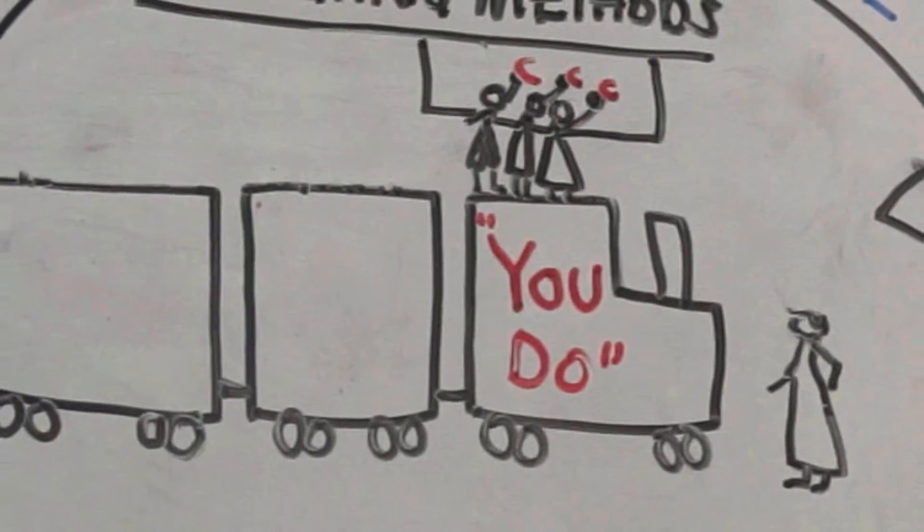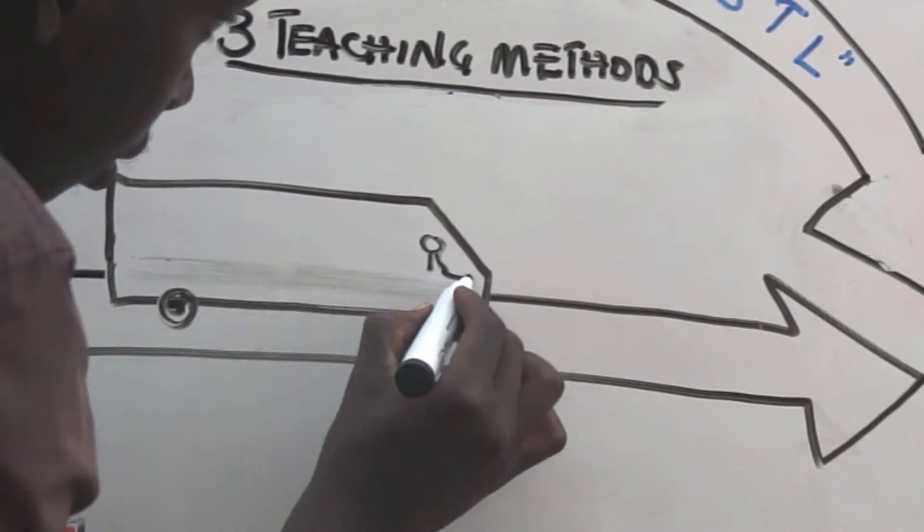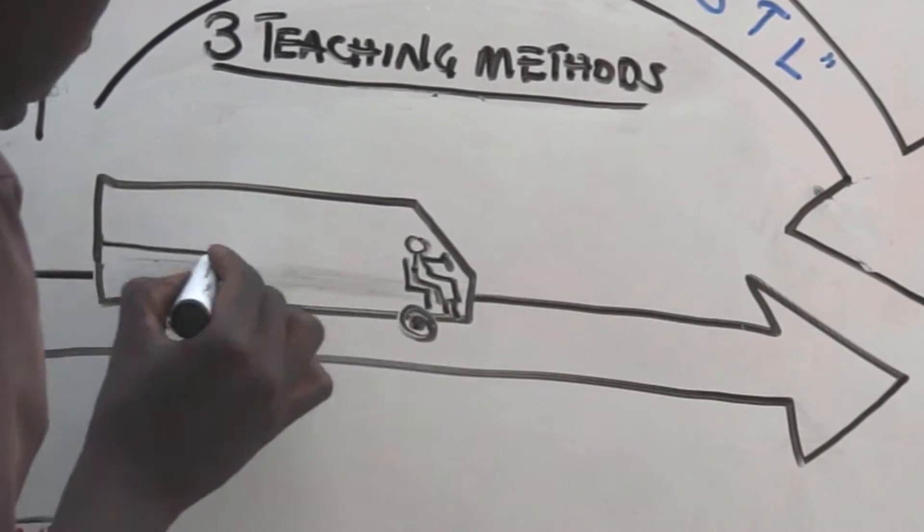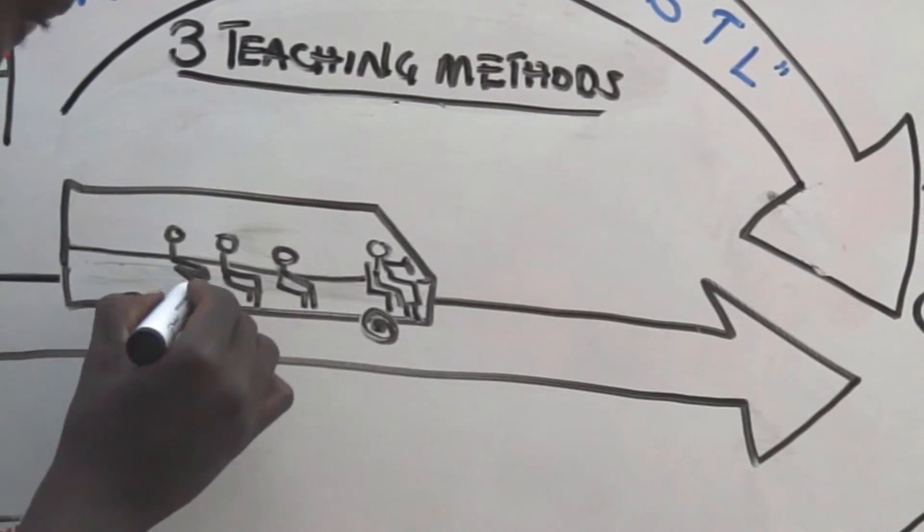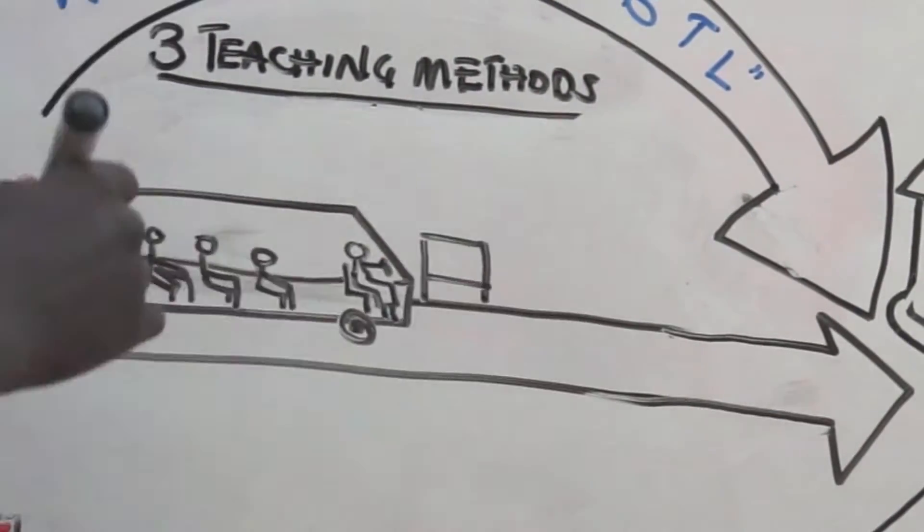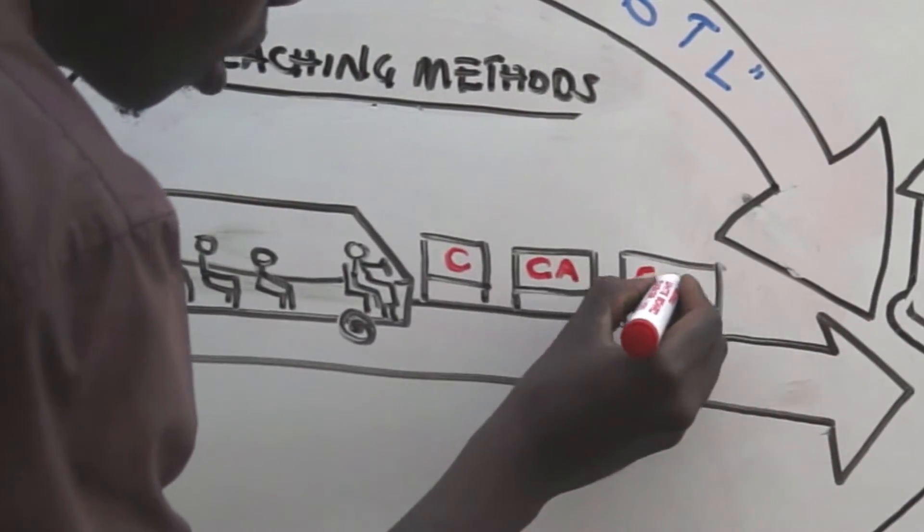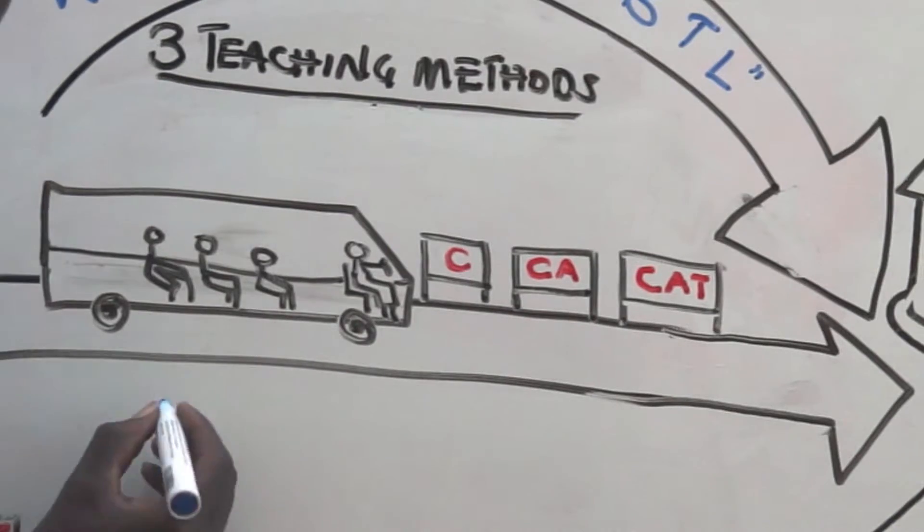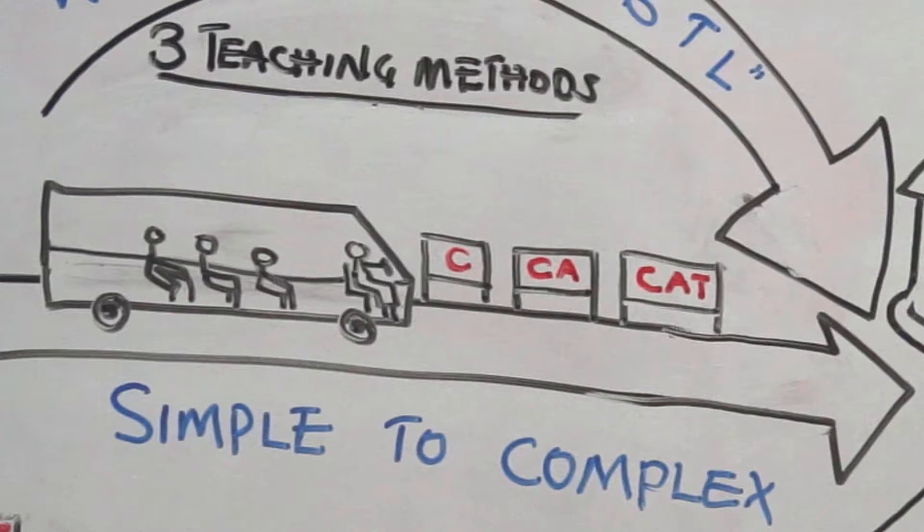Method three, from simple to complex. Our daily and weekly lesson format is designed so that pupils begin the week with a simple reading or writing task to accomplish. As the lesson unfolds over the course of the day and the week, the teacher continues to add complexity to the original task introduced on the first day. By the end of the week, the pupils are able to comfortably accomplish a much more complex reading or writing task.